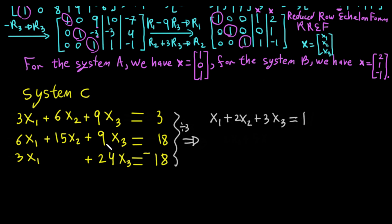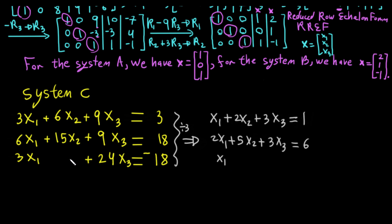Continuing: 9 divided by 3 is 3, giving 3x3. Then 6 divided by 3 is 2 for x1; 15 divided by 3 is 5 for x2; 9 divided by 3 is 3 for x3; 18 divided by 3 is 6; 3 divided by 3 is 1 for x1; 0 divided by 3 is 0; 24 divided by 3 is 8; and negative 18 divided by 3 is negative 6.